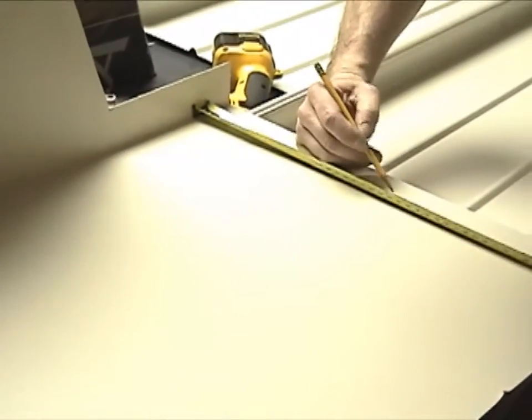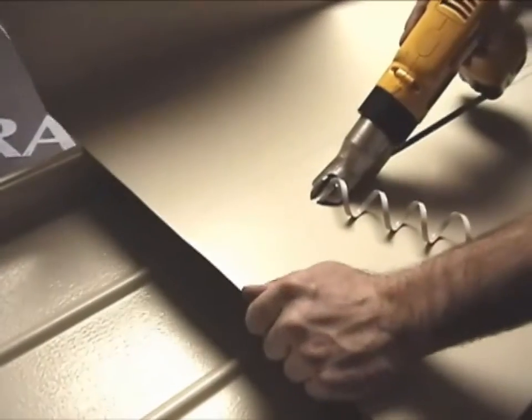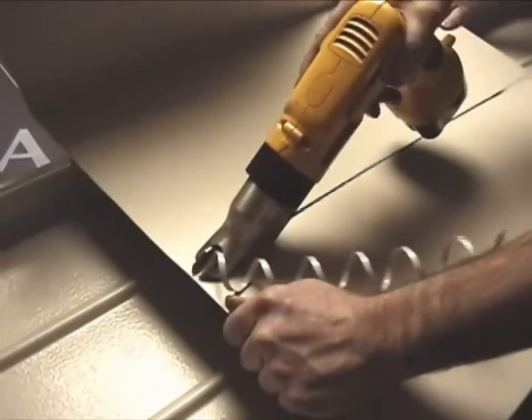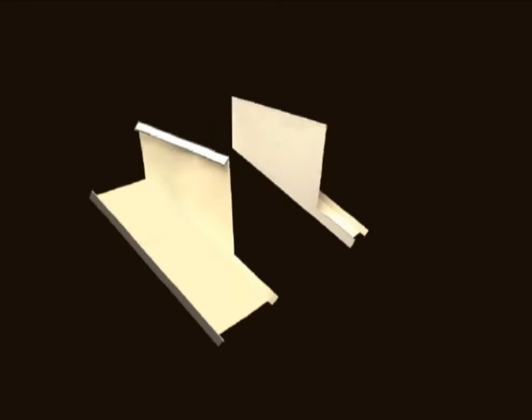To assemble the base flashing, start with the side pans. The side pans are factory supplied long. Field cut and bend up a 1 and a half inch leg. At the front of the side pan, field cut and bend a 3/4 inch hem. Do the same with the other side pan.